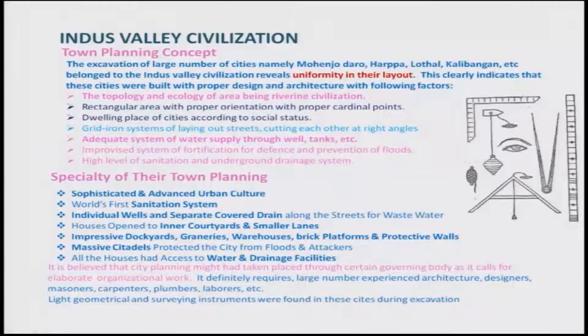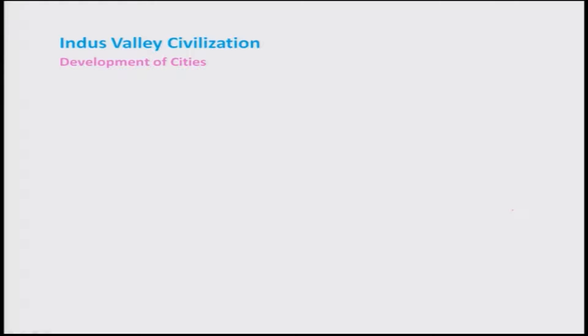Light geometrical and surveying instruments were found in these cities during excavations — things like a compass, balance systems, threads, and a stand for the balance used for surveying purposes. These instruments could be used for surveying and leveling. In this civilization, we see a clear development of cities.